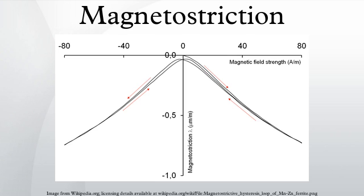Like flux density, the magnetostriction also exhibits hysteresis versus strength of magnetizing field. The shape of this hysteresis loop can be reproduced using the Jiles-Atherton model.